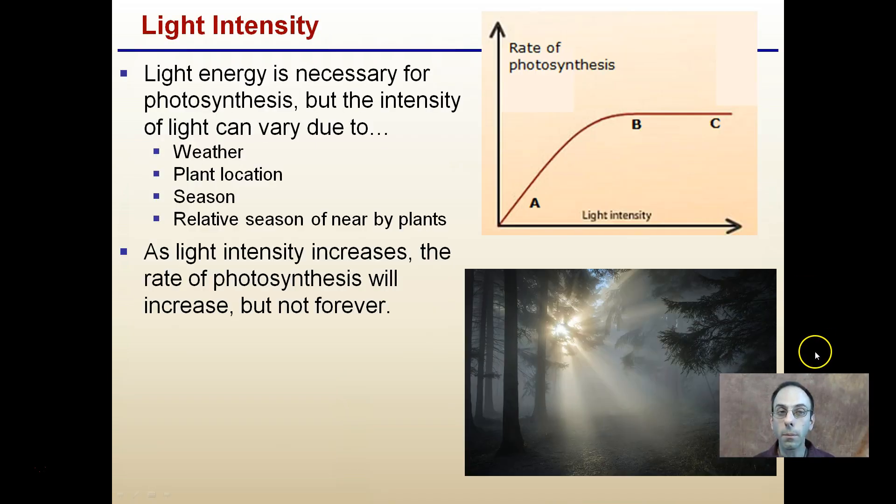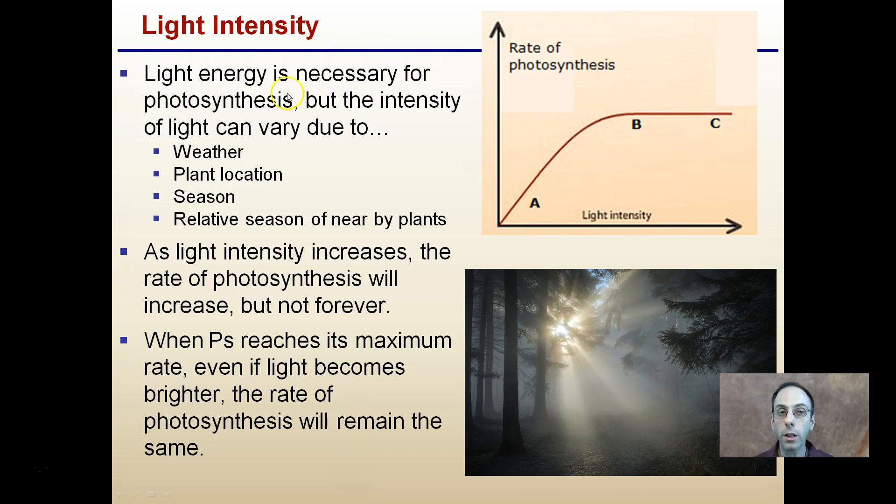So light intensity. Light energy is necessary for photosynthesis, as it applies in the name, photo meaning light. But the intensity of light can vary due to weather, for example. Is it a cloudy day? Is it a sunny day? Is it a foggy morning? How is that impacting the light intensity?